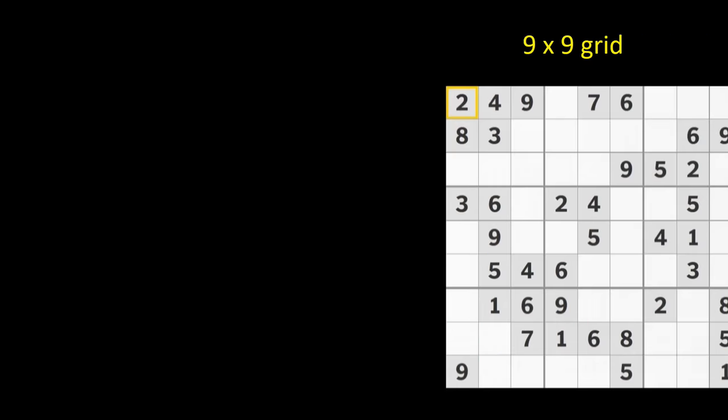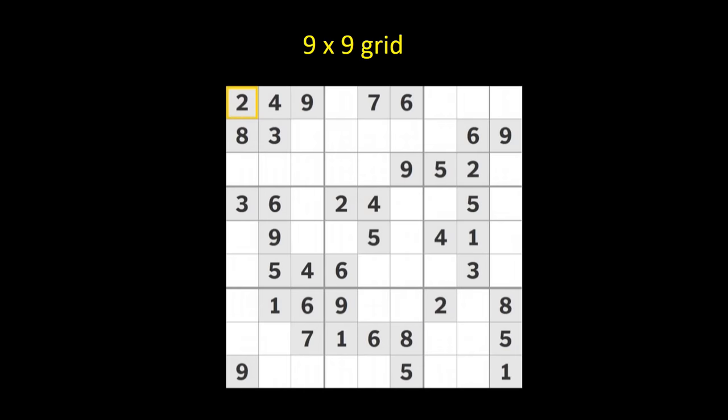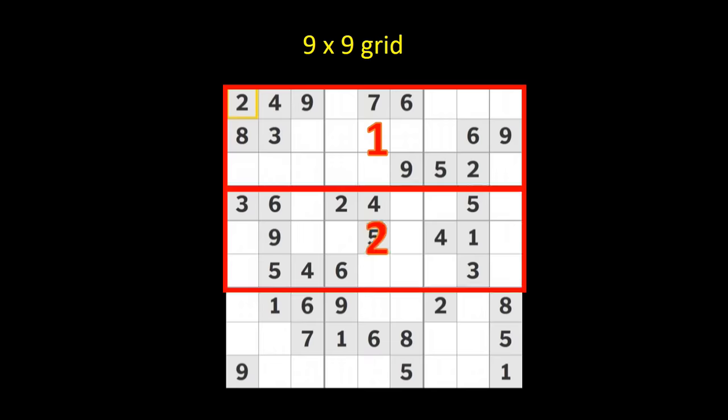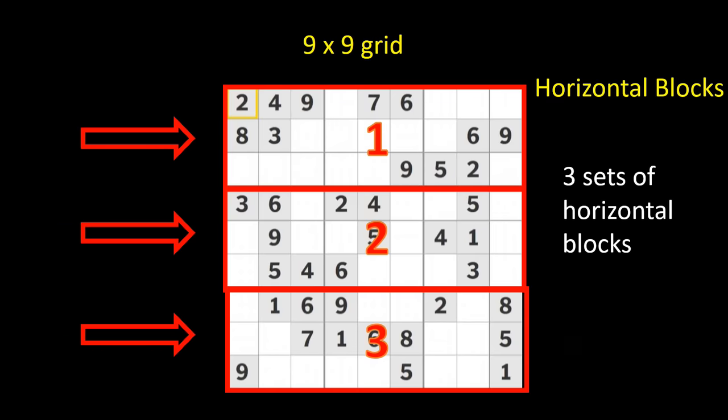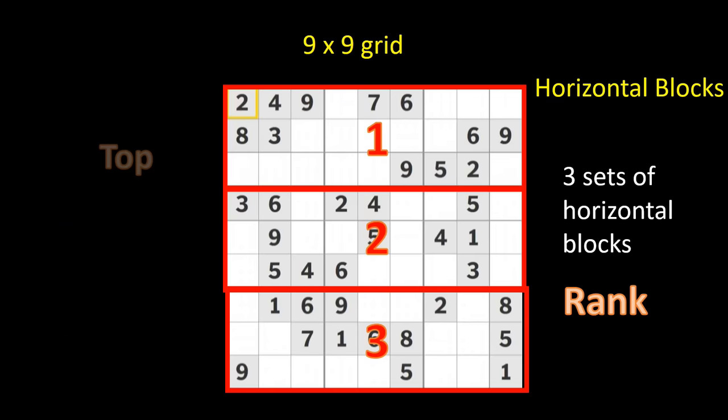We can look at the nine by nine grid in terms of groups of blocks. We have three groups of blocks looking across the rows. These blocks are grouped horizontally. Here you can see three sets of horizontal blocks. A set of three horizontal blocks is called a rank. We have the top rank, the middle rank, and the bottom rank.